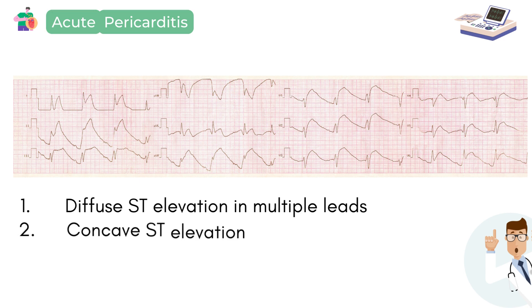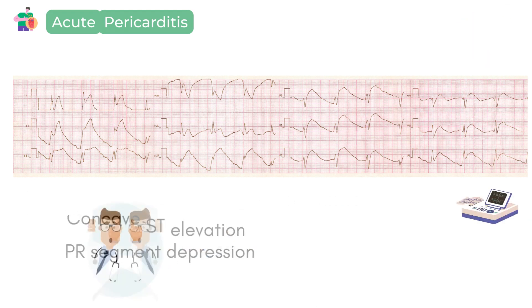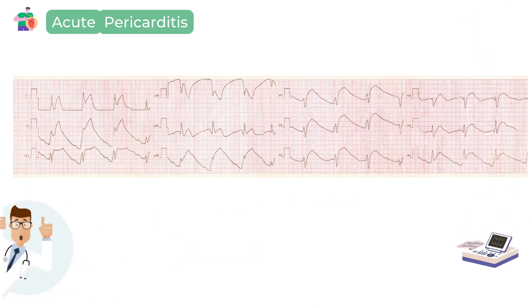The ST elevation seen in pericarditis is typically concave up. The second important finding that you must carefully look for — because this area of the ECG can often be overlooked — is the presence of PR segment depression. The ST elevation in acute pericarditis takes time to resolve; it gradually resolves over a period of weeks, and after the ST elevation resolves, you can see subsequent T-wave inversions in the ECG.